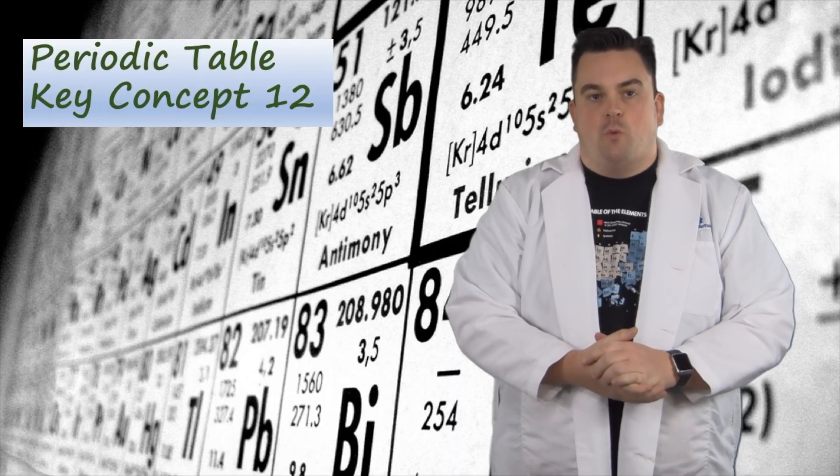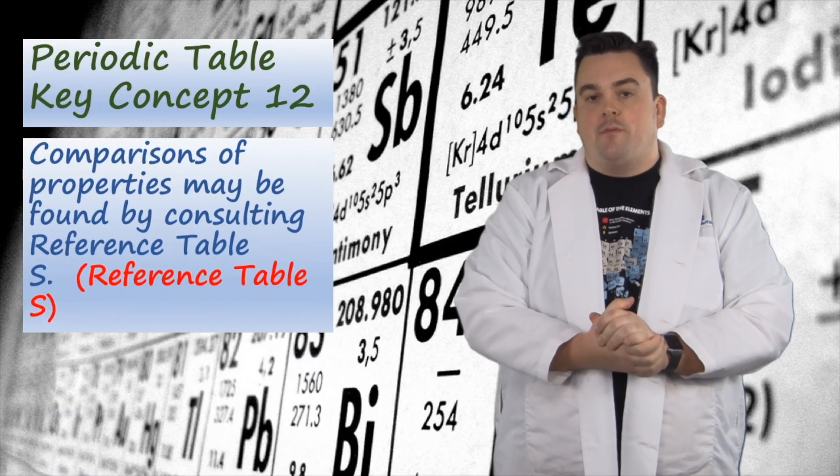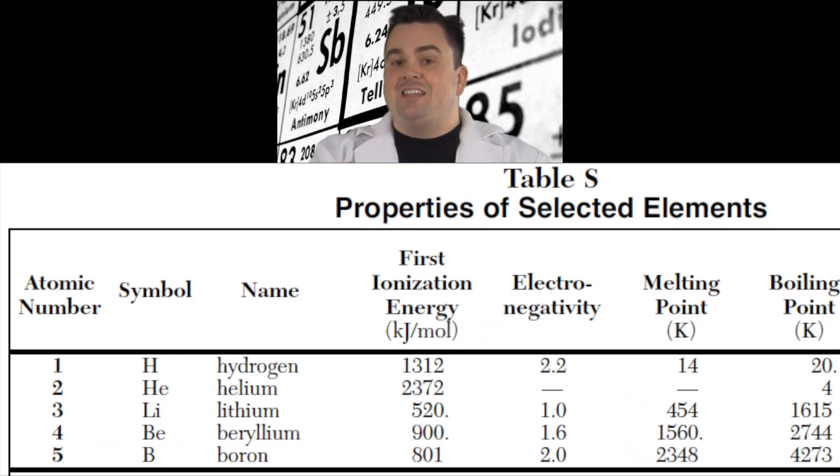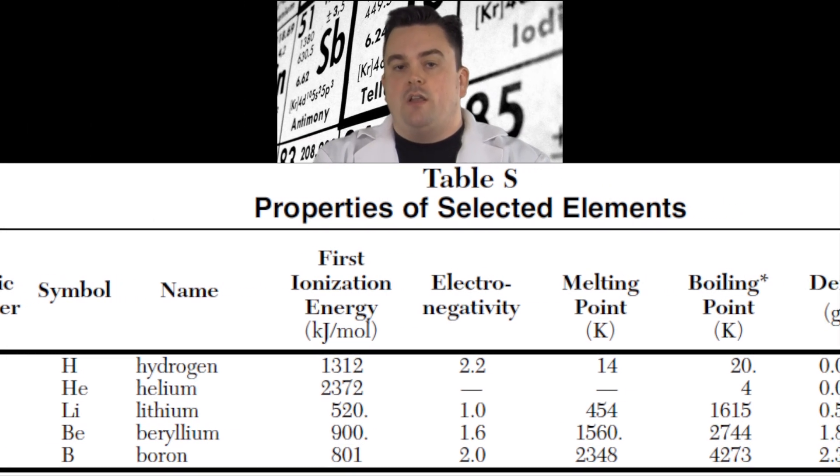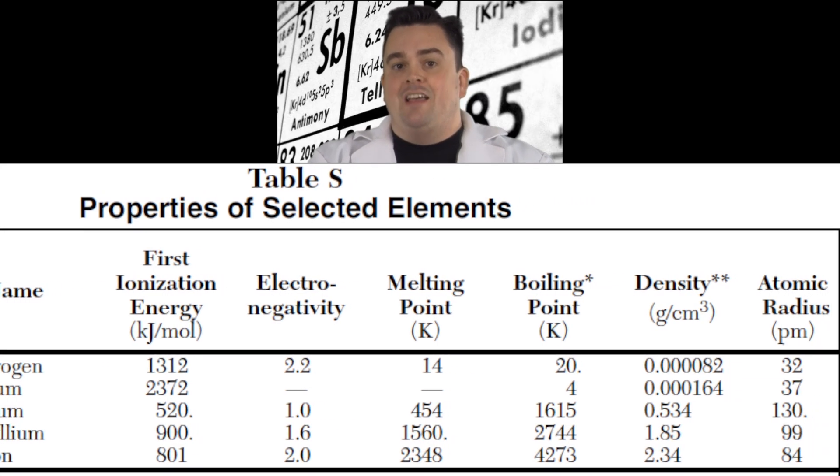Periodic Table Key Concept 12. Comparisons of properties may be found by consulting Reference Table S. Now, guys, you have more than 40 minutes for this. This is not a unit test. You have three hours for this exam. So if you forget all the trends we just discussed in this video, you can look up the values on Table S. You have plenty of time. Now, in addition to the trends we just spoke about in this video, you also have values for melting point, boiling point, and density. Say yes to Table S.